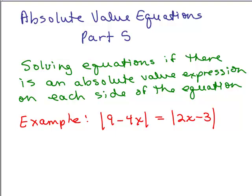This is part 5 of solving absolute value equations. We'll be solving equations where there's an absolute value expression on each side of the equation — something that looks like this example: the absolute value of 9 minus 4x equals the absolute value of 2x minus 3.